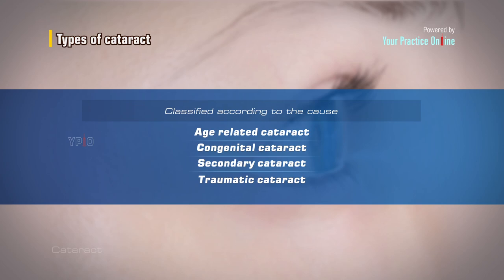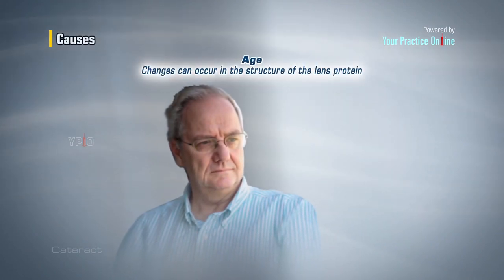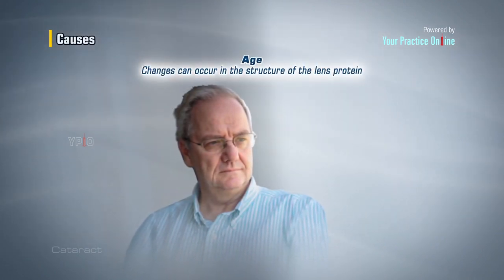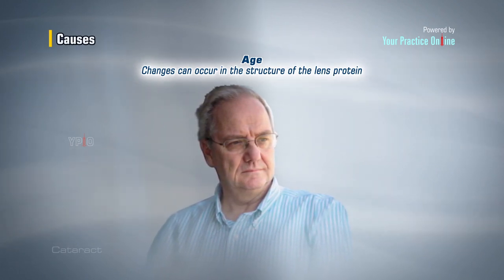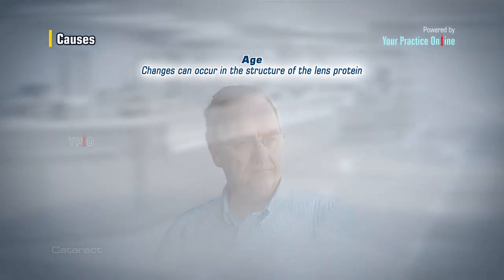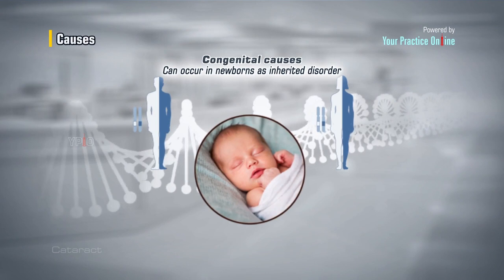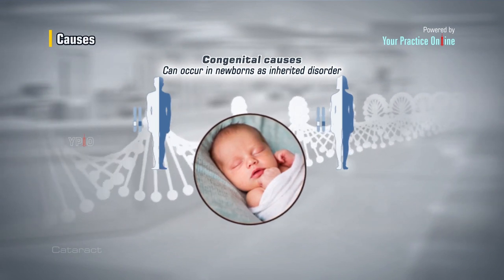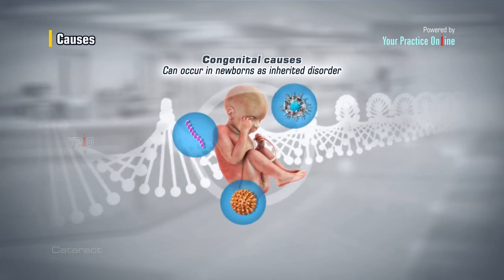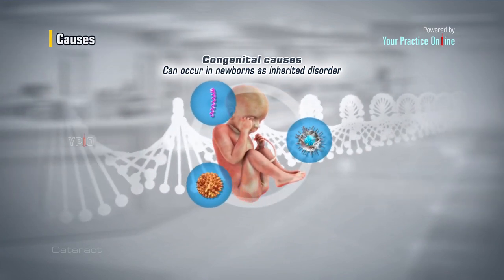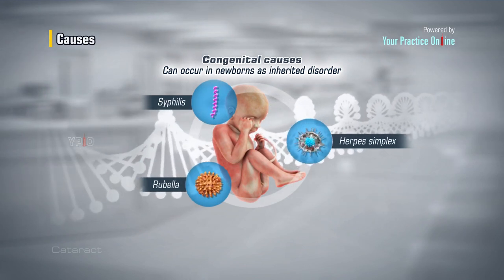Cataract can occur due to many reasons. As people age, changes can occur in the structure of the lens protein leading to cataract. Cataract can occur in newborns as an inherited disorder or can develop in infants because of infections in the mother during pregnancy, such as rubella, herpes simplex, and syphilis.